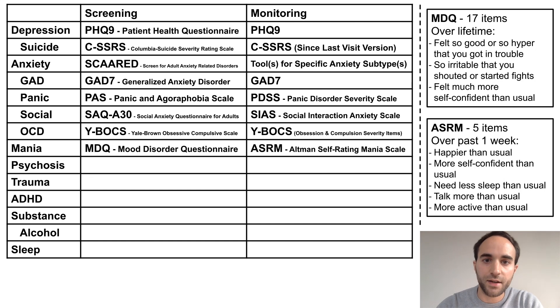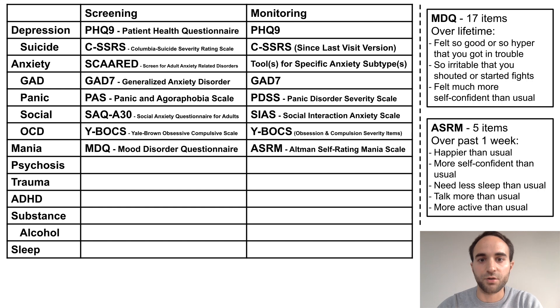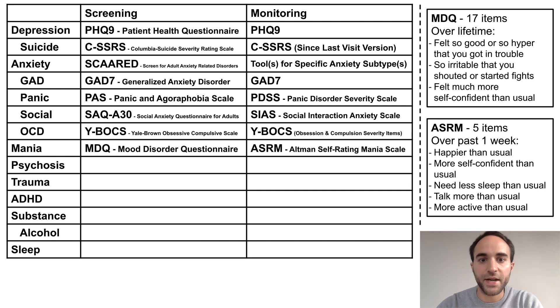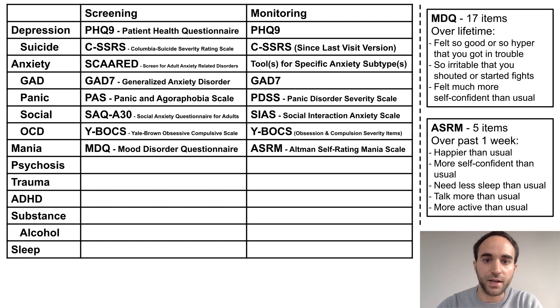For mania, the MDQ screens for any past manic episodes across the lifetime. The ASRM, by contrast, monitors for early symptoms of a manic episode over the past week and is therefore better for monitoring.